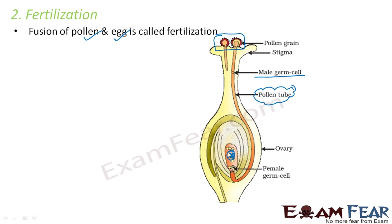When the male gamete and female gamete fuse together, they produce a structure called a zygote — a single cell. This single cell then undergoes repeated cell division to form a multicellular structure, which will later develop into a new organism altogether.